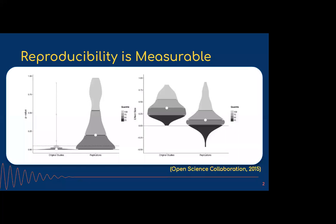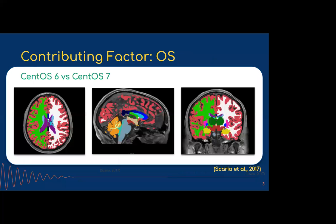These are psychology studies — this is the big, first high-profile example that made the news showing reproducibility might be a problem and we should start being more careful. There are many cases of this in neuroimaging as well.